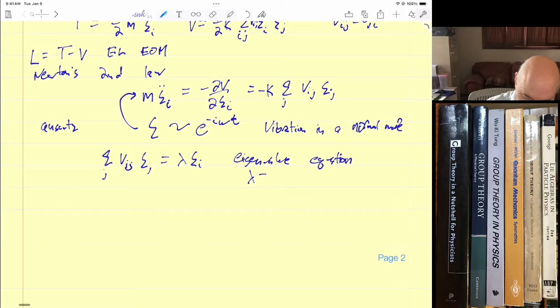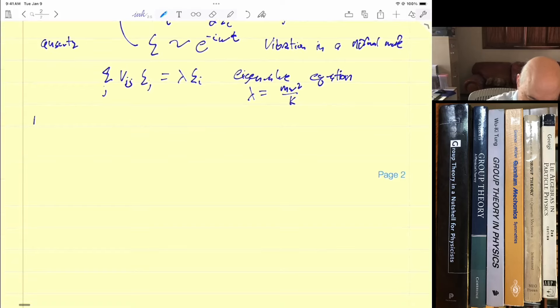So I defined lambda as m omega squared over k. Okay. So the normal modes are the eigenvectors of the matrix, and with eigenvalues lambda related to frequencies by omega equal to the square root of lambda k over m.